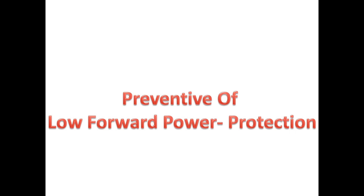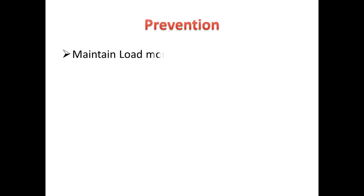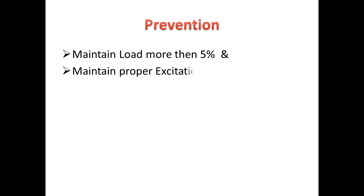Next we will see how to prevent low forward power. We have to maintain the generator load above 5 percentage and maintain proper excitation of the system. Now we will see how to test low forward power production.